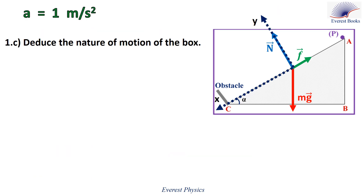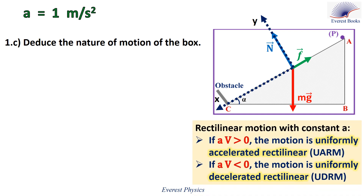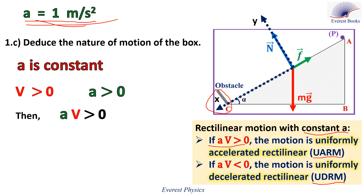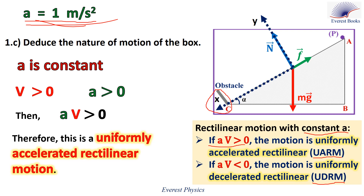Let's move to part 1c: Deduce the nature of motion of the box. For rectilinear motion with constant acceleration: if A times V is positive, the motion is uniformly accelerated rectilinear motion (UARM); if A times V is negative, the motion is uniformly decelerated rectilinear motion (UDRM). The acceleration equals 1 meter per second squared, so the acceleration is constant. Particle P moves down the inclined plane, so it moves in the positive X direction — V is positive. A is also positive. Therefore, A times V is positive, and this is a uniformly accelerated rectilinear motion.